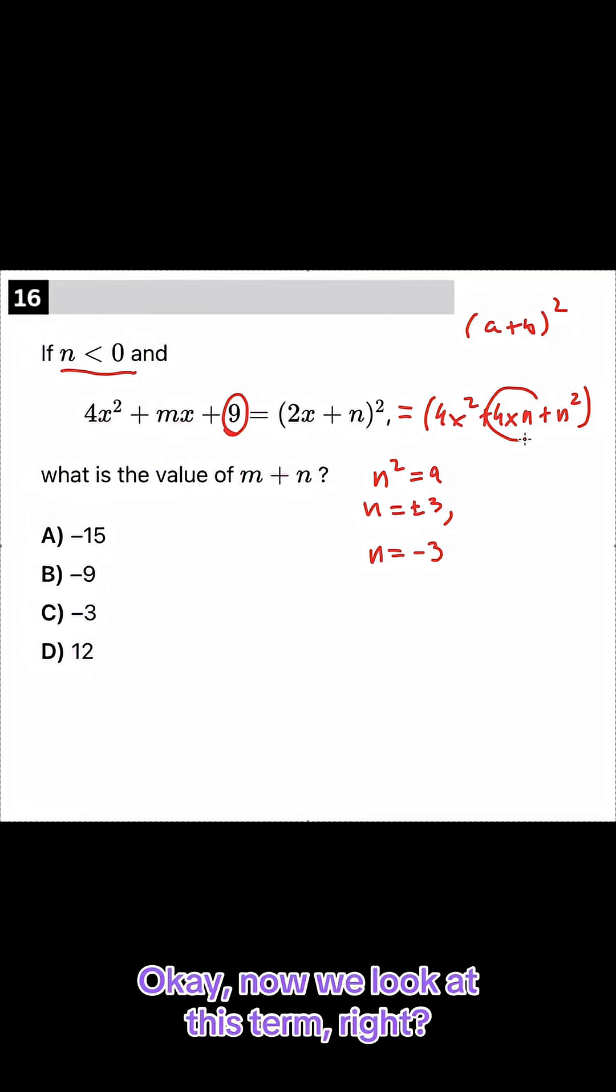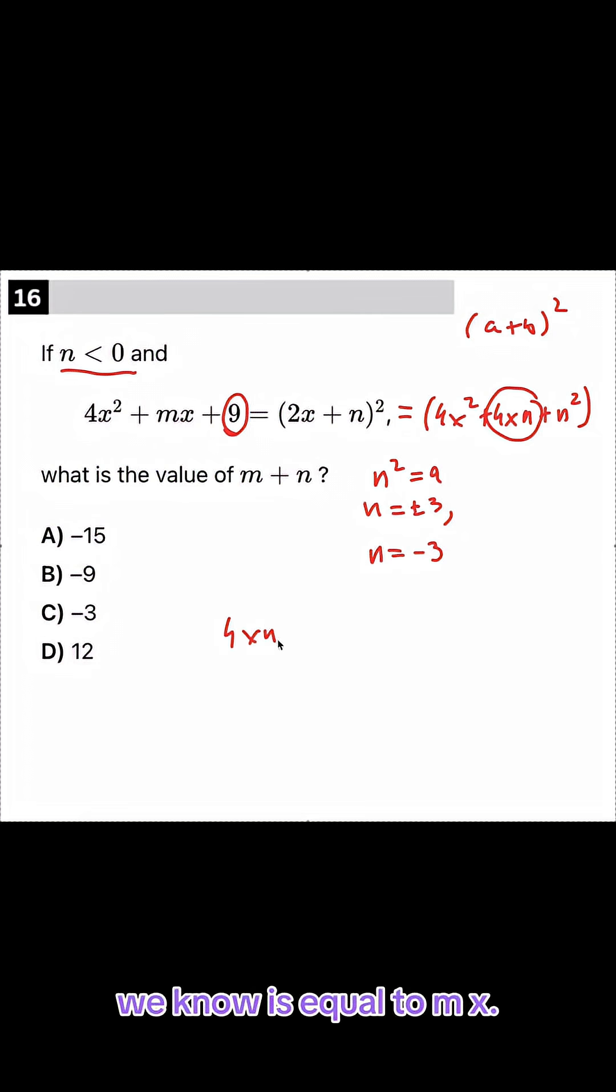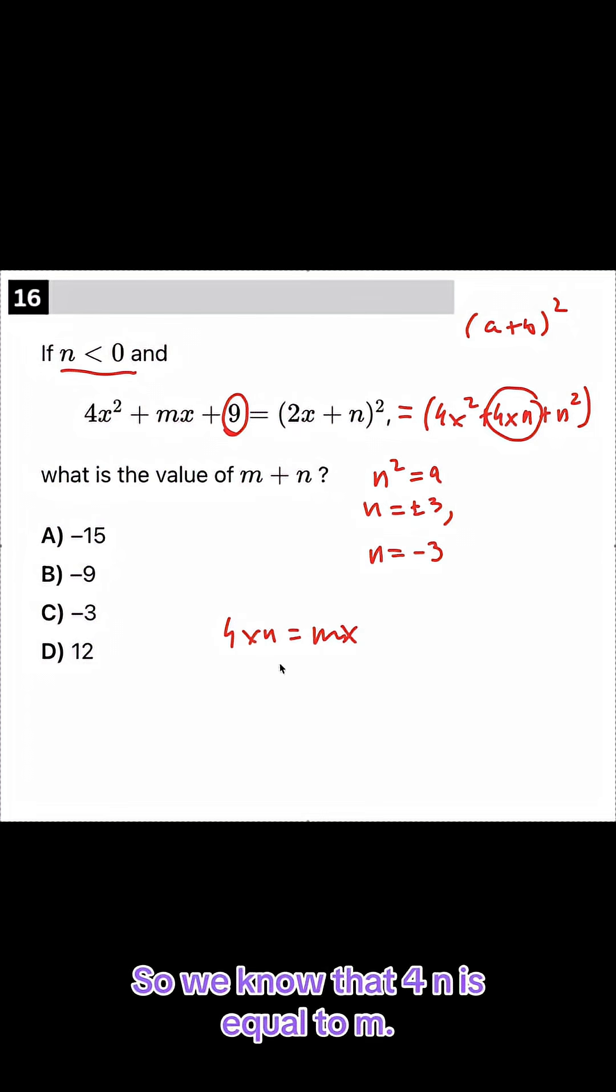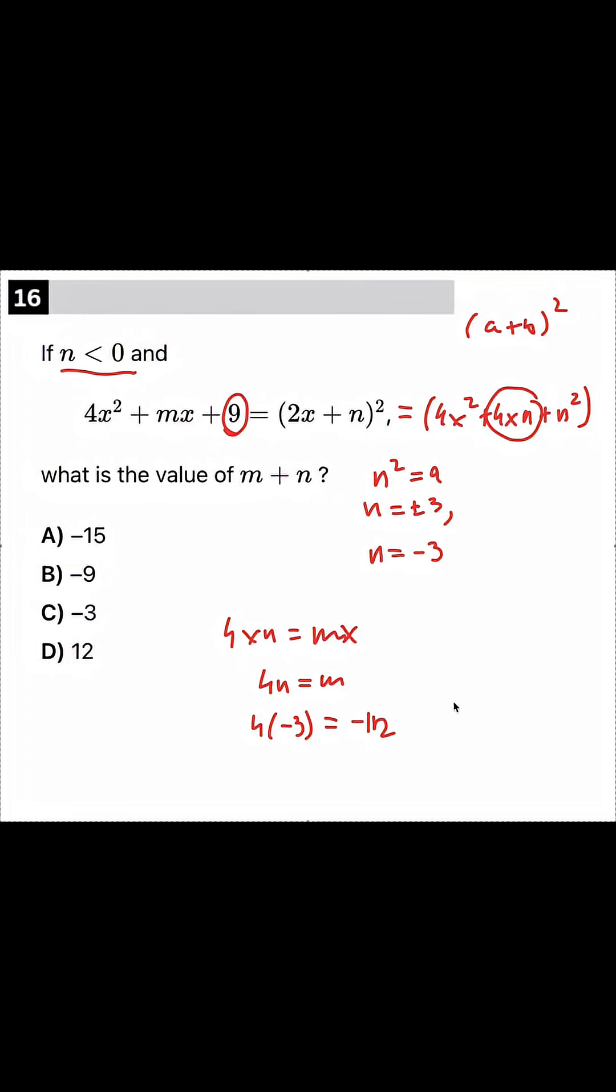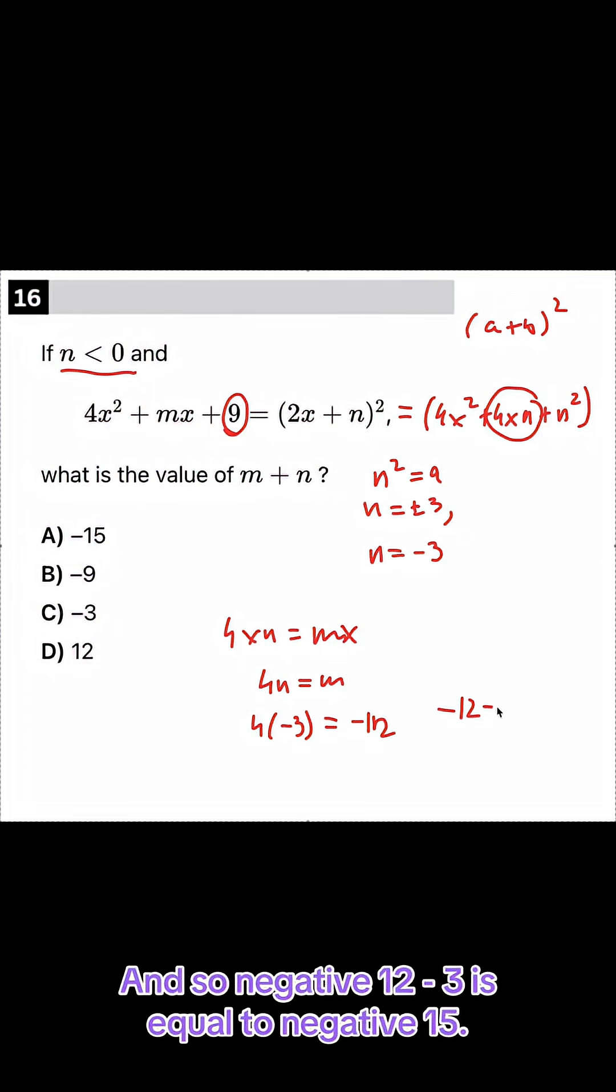Okay, now we look at this term, right? 4xn we know is equal to mx. So we know that 4n is equal to m, and so 4 times negative 3 equals negative 12. And so negative 12 minus 3 is equal to negative 15.